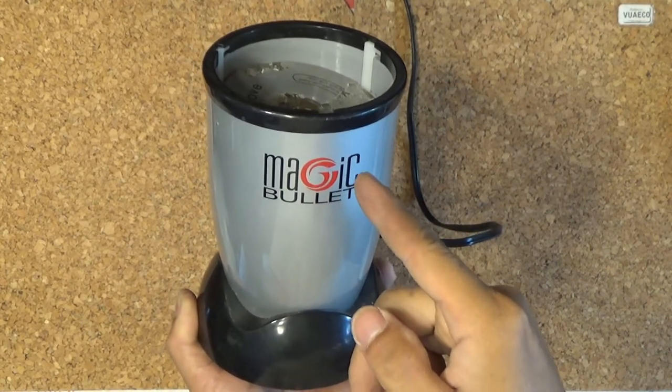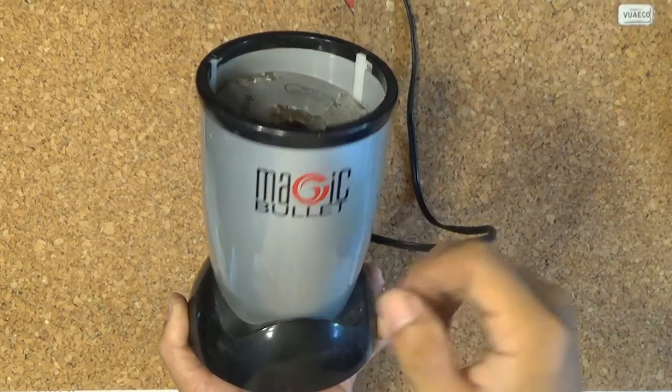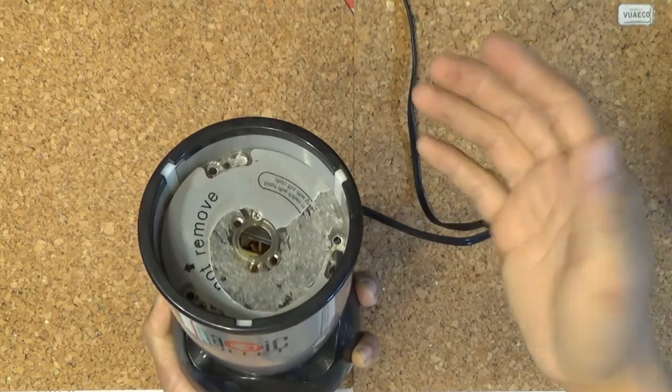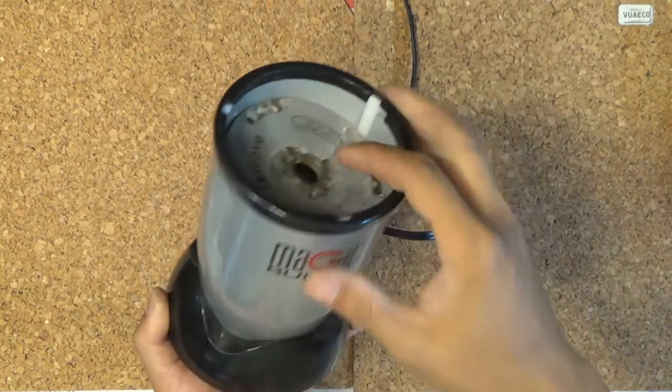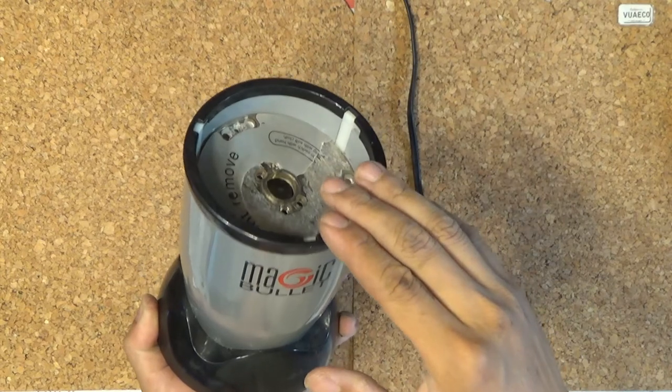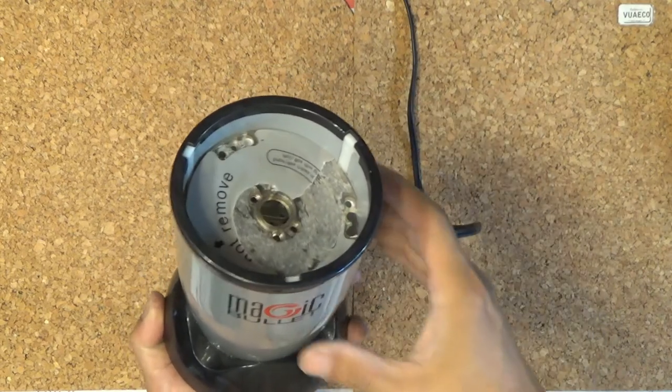Today I have a Magic Bullet I found in a dumpster and I assume it's not working. Today I'm gonna do a teardown, show you what's inside, and hopefully help you fix it if you have a problem with it. So let's get started.